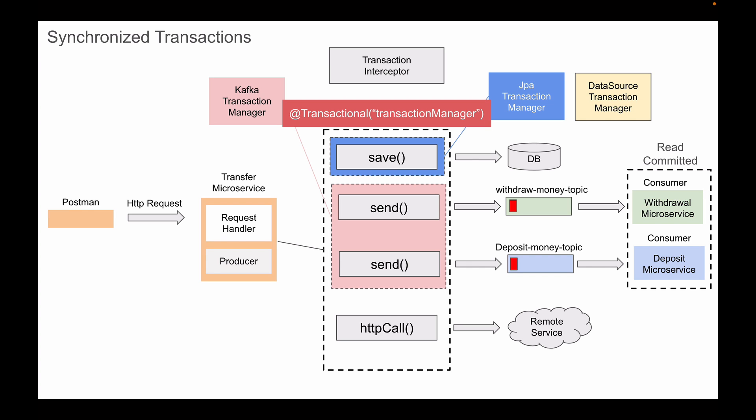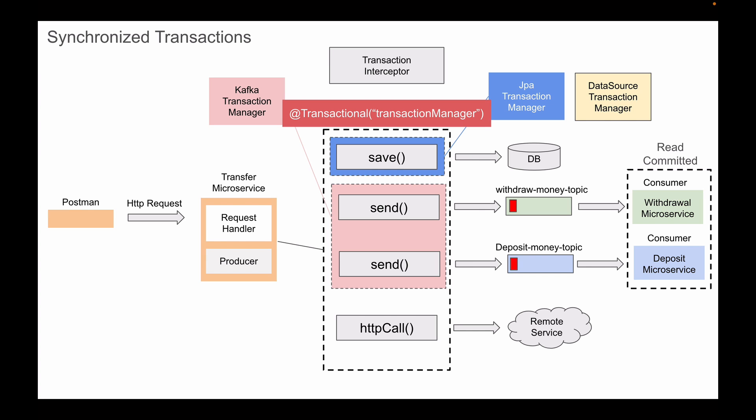When a method with the transactional annotation is called, the interceptor is invoked first. It will start the transaction before executing the method. When this interceptor starts the transaction, the Kafka template object that we use to send Kafka messages will synchronize its transaction with the transaction started by this transaction manager. So each Kafka send method and each database save method will all participate in the same transaction. When our method exits, the database transaction will commit first, followed by the Kafka transaction.